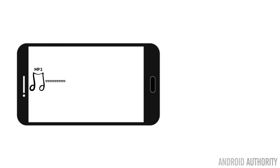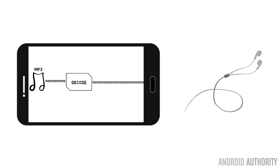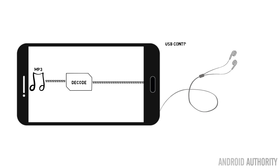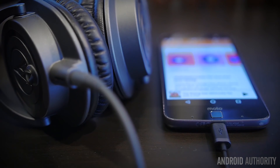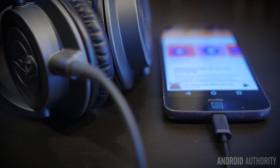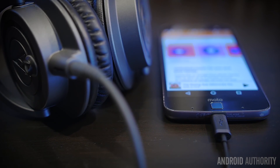When you're using USB Type-C headphones, things are a bit different. The mp3 file is decoded to produce the full uncompressed audio stream that goes out to the USB controller on the smartphone, into the USB controller on the headphones, and then into a DAC that's in the headphones.